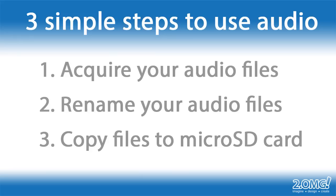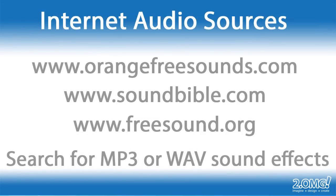The first step is to find and download the audio tracks you want to use. The Prop Jammer can use either MP3 or WAV audio files, and there are quite a few different sources on the internet. A few of my favorites are orangefreesounds.com, soundbible.com, and freesound.org. If you search for MP3 or WAV sound effects using Google, Bing, or whatever search engine you like, you'll find no lack of sources for some pretty cool sound effects, and most of them are free.